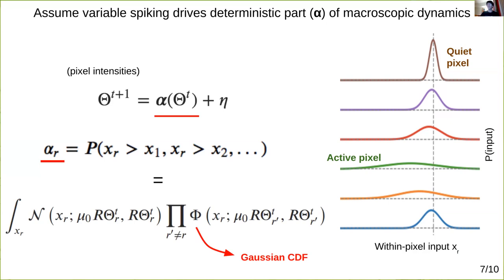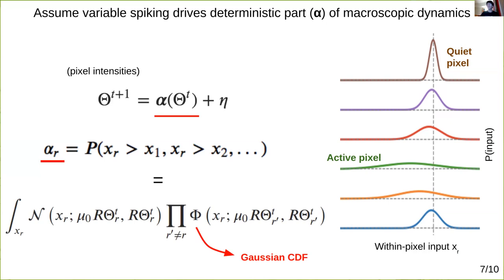When you write all this out, each component alpha r of this map ends up having the form of an integral of a Gaussian times the product of r minus 1 cumulative Gaussians, where you can see that the different components of theta scale the means and variances of these terms. In any case, this specifies alpha sub r, the rth component of our macroscopic map, and one can in fact analytically compute the Jacobian of this map alpha along with its maximum eigenvalue at the central fixed point.